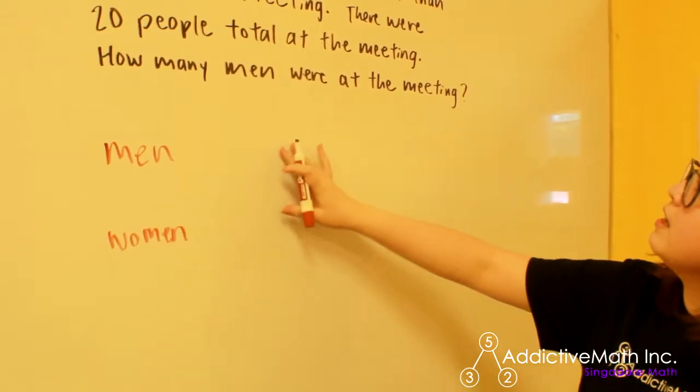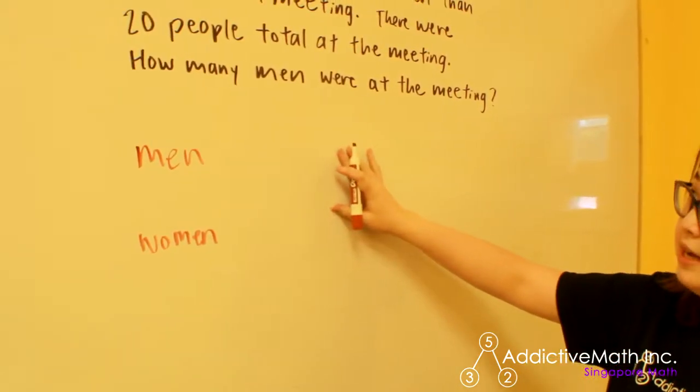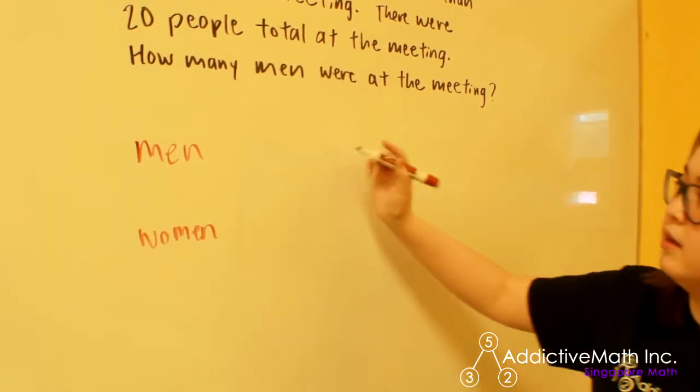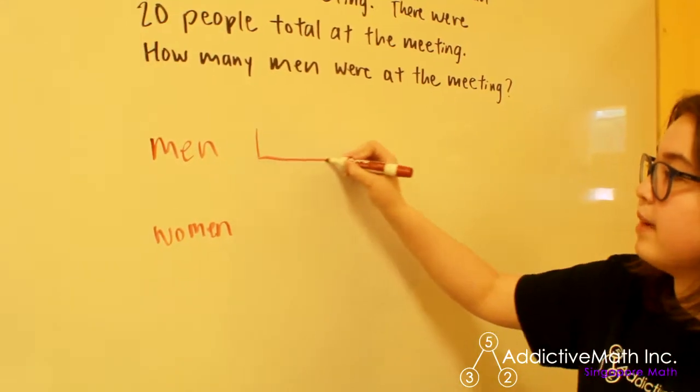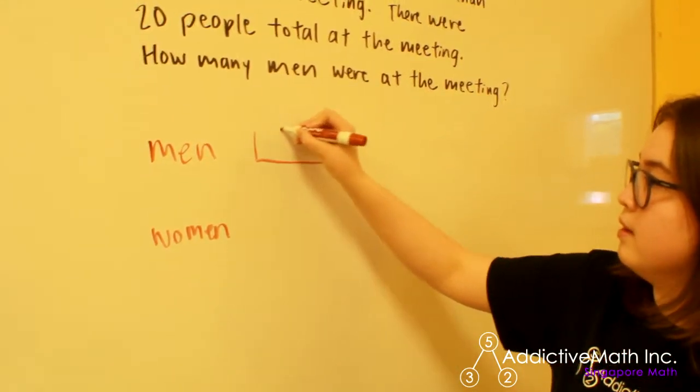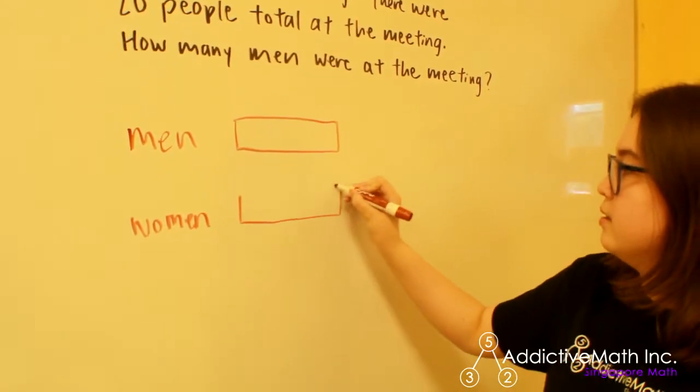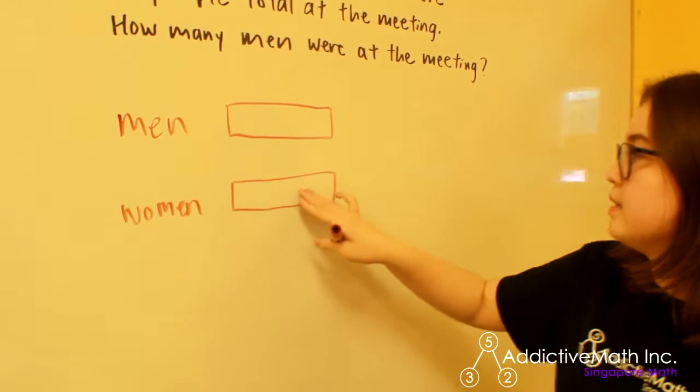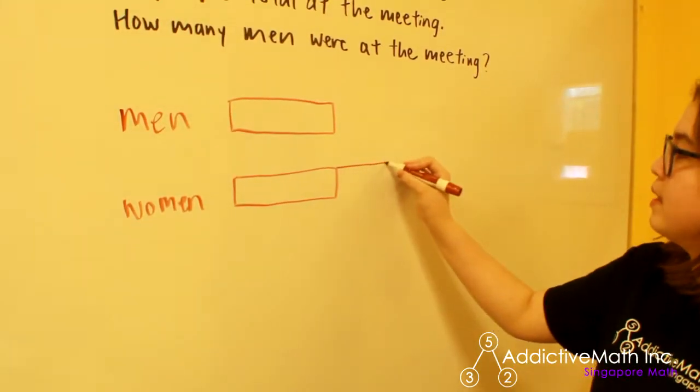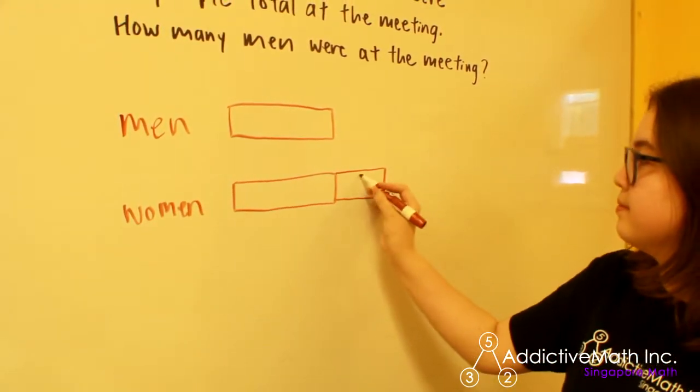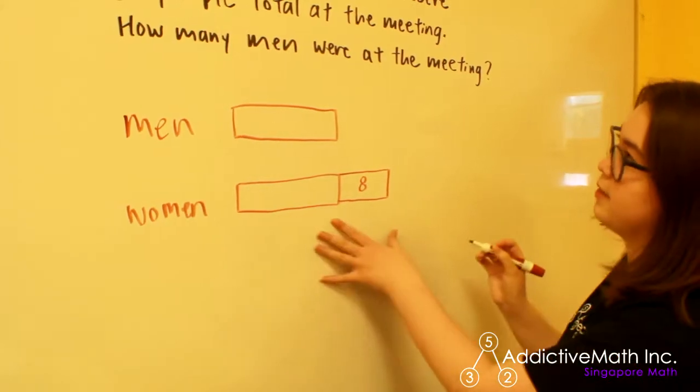So there are eight more women than men at the meeting. So there's some quantity of men, which we don't know. And then there are eight more women. So the number of women can be described as the number of men plus eight more. So I'll label this as eight, right here.